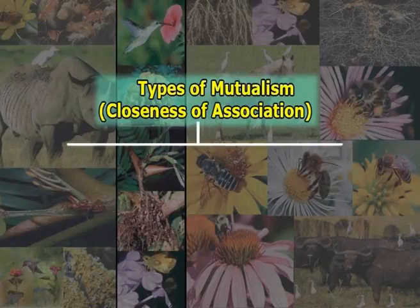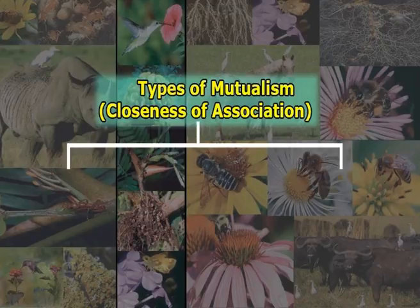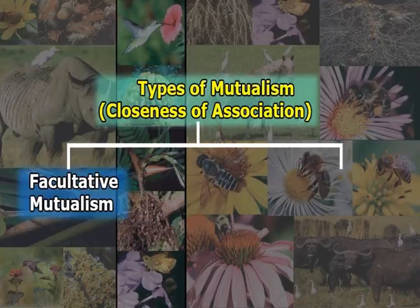In mutualism, two species interact in such a way that both partners are benefited, so it is also referred to as a win-win relationship. Mutualism can be differentiated into two types on the basis of closeness of association. The first is facultative mutualism, in which both organisms benefit by living in close association, but the relationship is not essential. The species can live without its mutualistic partner.